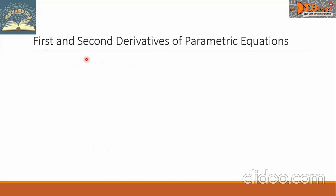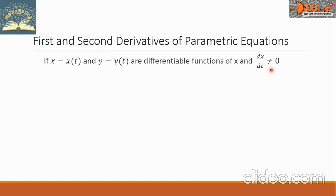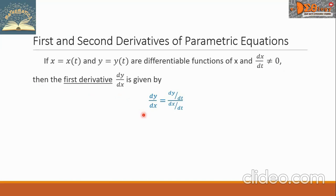Let us go now to the first and second derivatives of parametric equations. If x equals x of t and y equals y of t are differentiable functions of t, and dx over dt is not equal to 0, then the first derivative dy over dx is given by dy over dx equals dy over dt — the derivative of y with respect to t — all over dx over dt, the derivative of x with respect to t.